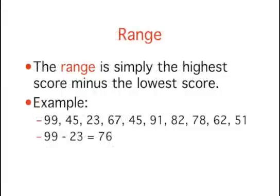The range is the simplest measure of variability. It is the highest score minus the lowest score. Consider the ten numbers shown here. The range is just the highest number, 99, minus the lowest number, 23, which means the range is 76.